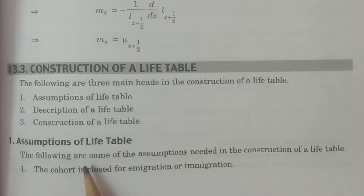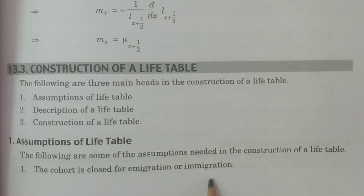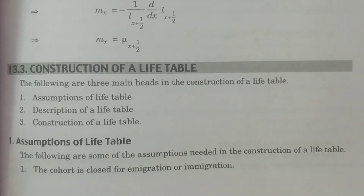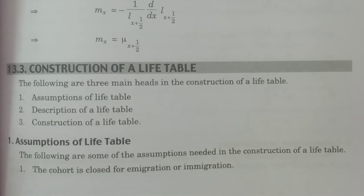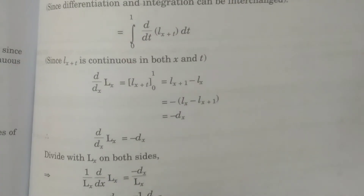First we see what are the assumptions of life table. To construct a life table, some assumptions are needed. The cohort is closed for immigration and emigration. What is meant by cohort? It is an initial population — some population constructed in a particular period, in a geographical region, at some particular place. So that is called cohort. This is the first assumption.